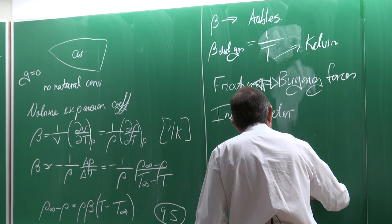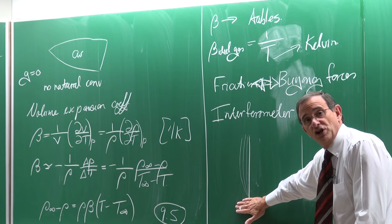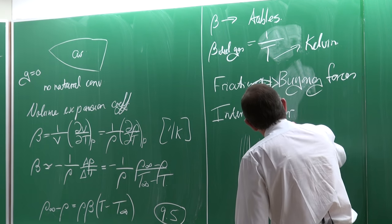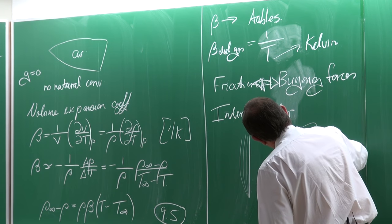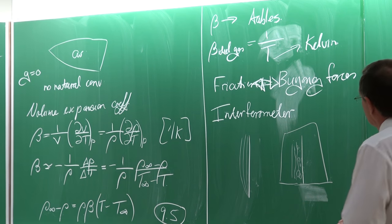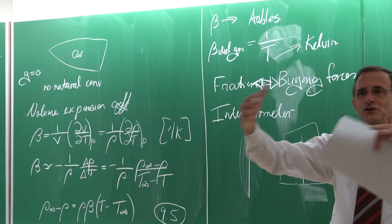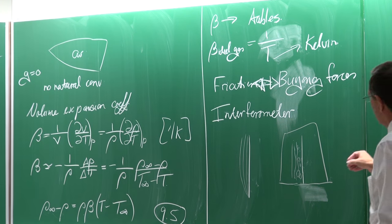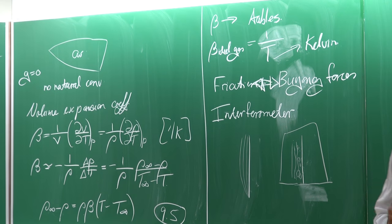In your textbook there are two examples of interferometer results. One shows a flat plate with laminar flow — you can see the isotherm lines clearly. Another shows a flat plate in turbulent flow, where the patterns look totally different. That instrument can be used for eggs, beer cans, etc., to get an indication of the flow field around a body. If velocities are very small, they are very difficult to measure.